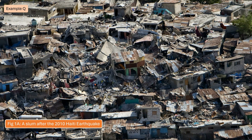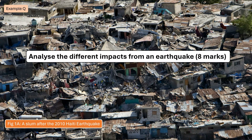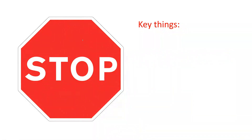Now I'm going to go through an example question and I'll get you to stop and see what you would do to answer it. Here's the source that's been given — it's a picture of a slum after the 2010 Haiti earthquake, but more importantly the question is: analyse the different impacts from an earthquake. As I said before, see how you try and answer that question before you look at the source. If you didn't have a source, what knowledge could you bring in to answer that question? Then we'll use the bits of evidence on this source to prove what we're trying to say. Stop the video now with pen and paper.